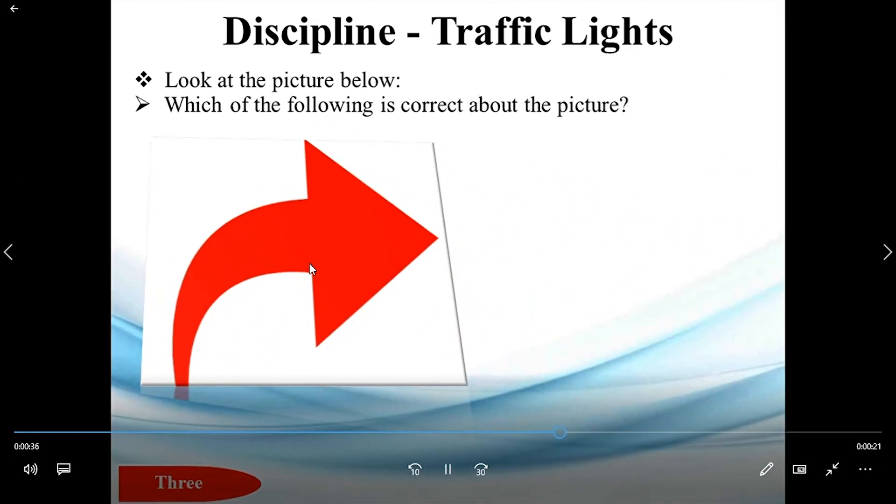Look at the picture below. Which of the following is correct about the picture? A. Turn left. B. Turn right. C. Go straight. And D. Go down. And the right answer is B, turn right.